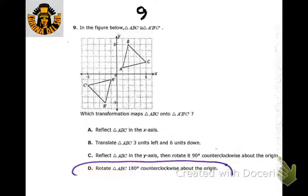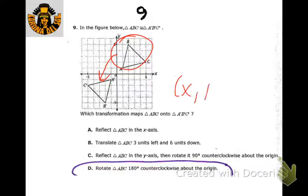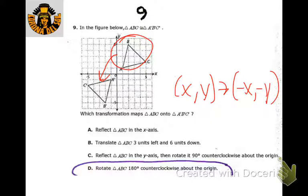You can tell this triangle — if you want to figure out how to get from the preimage to the image — you can rotate it 180 degrees about the origin. What happens rule-wise with your coordinates is that (x, y) becomes (−x, −y). So if you memorize your rules, you'll be able to figure that out point by point. This point here is (1, 1), so this one would be (−1, −1).